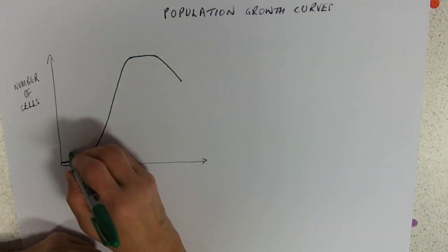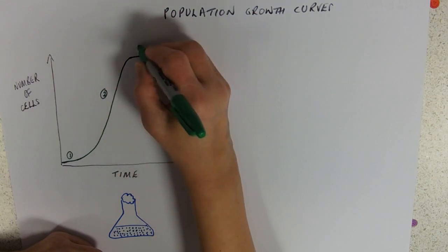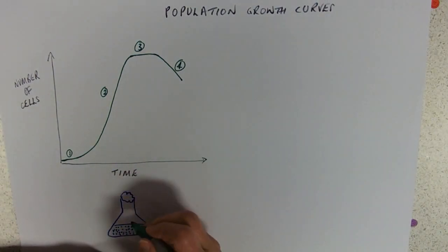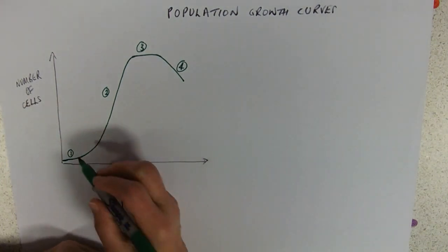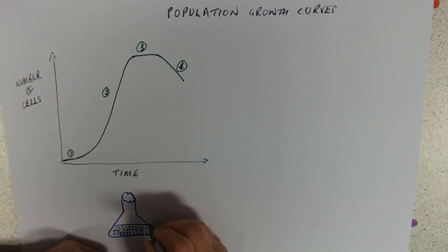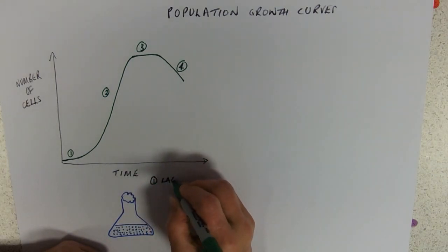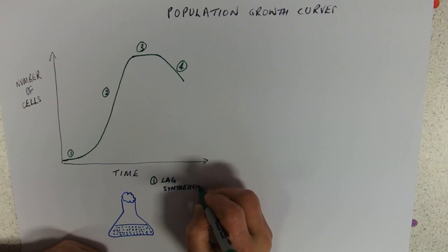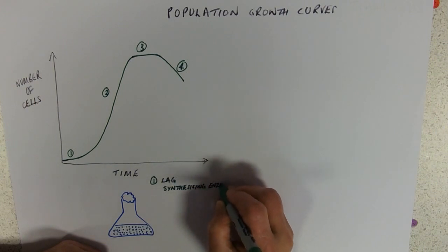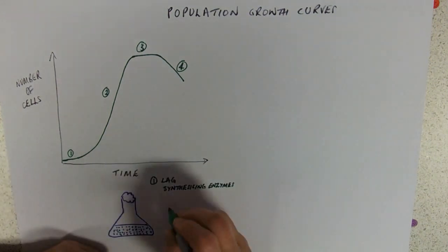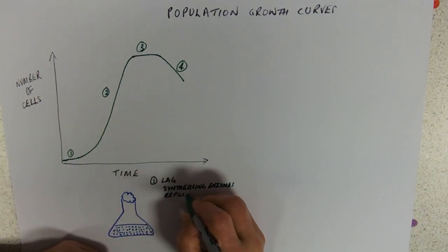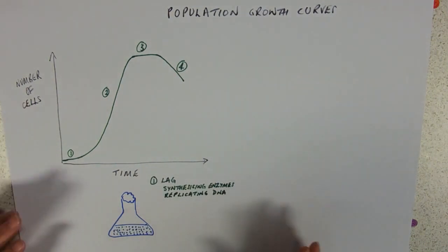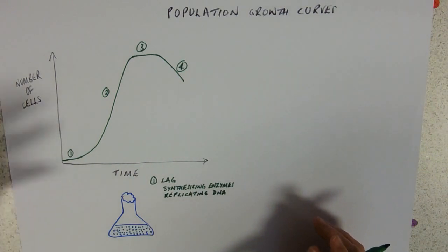There are four distinct phases. All we've got going on is cell production and cell death. Phase one is called the lag phase. Because we're talking about unicellular organisms, what they're doing in the lag phase is synthesising enzymes and replicating their DNA. If you're growing something like yeast from dried yeast, they might also be hydrating.